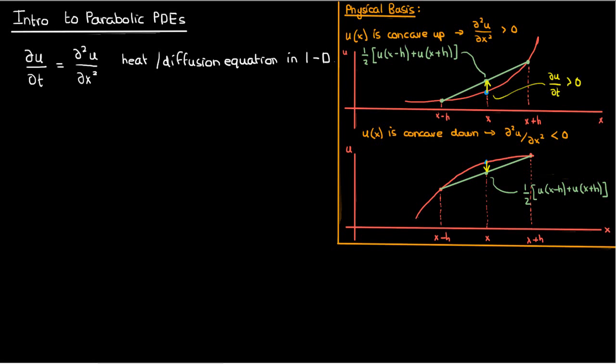This is why if u is concave down at a particular point, then du/dt is less than zero at that point because u wants to decrease in order to match its average value in the surroundings.